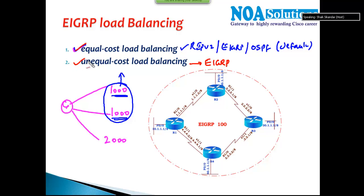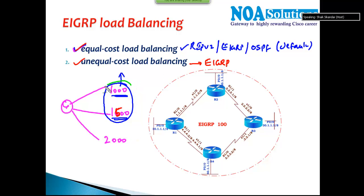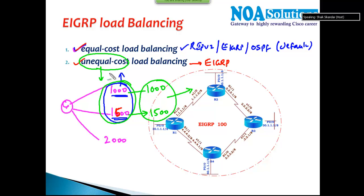The unique feature in EIGRP is that it is the only protocol which not only supports equal cost but also supports unequal cost load balancing. For example, if the cost from one path is 1000, another is 1500, and another is 2000, the best route is 1000. But if you want to load balance between the 1000 and 1500 routes even though they are not equal — that is called unequal cost load balancing, and this is also supported in EIGRP.